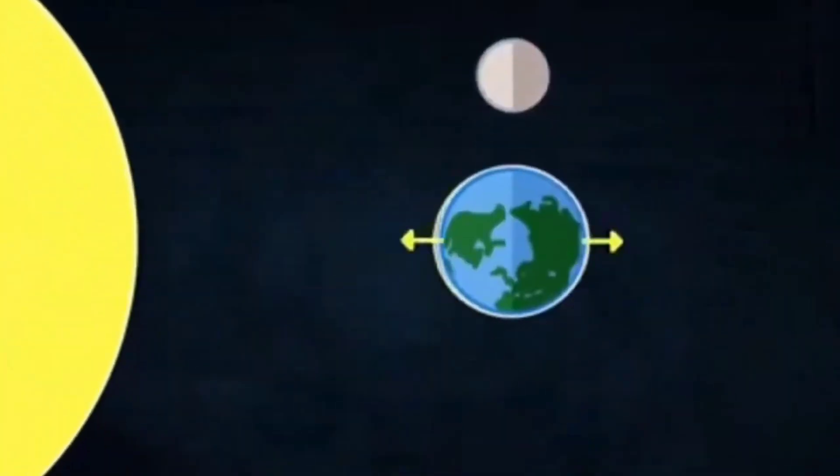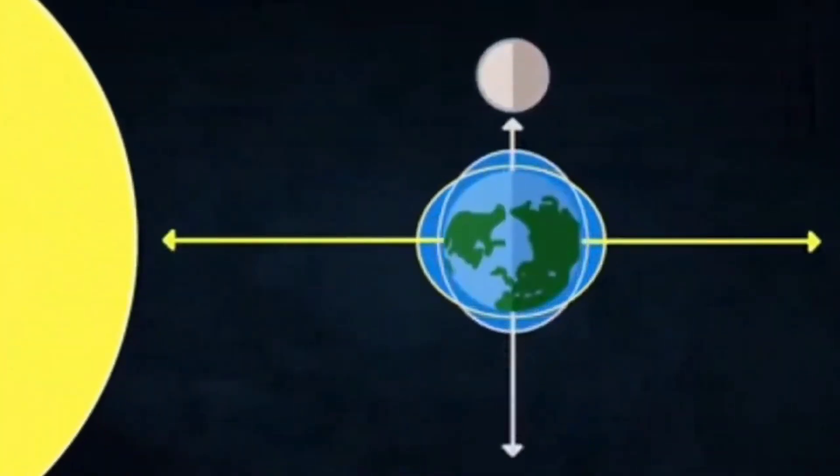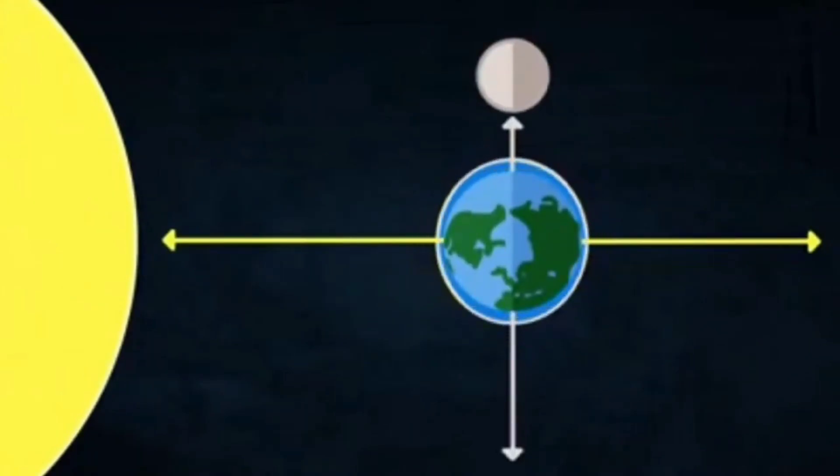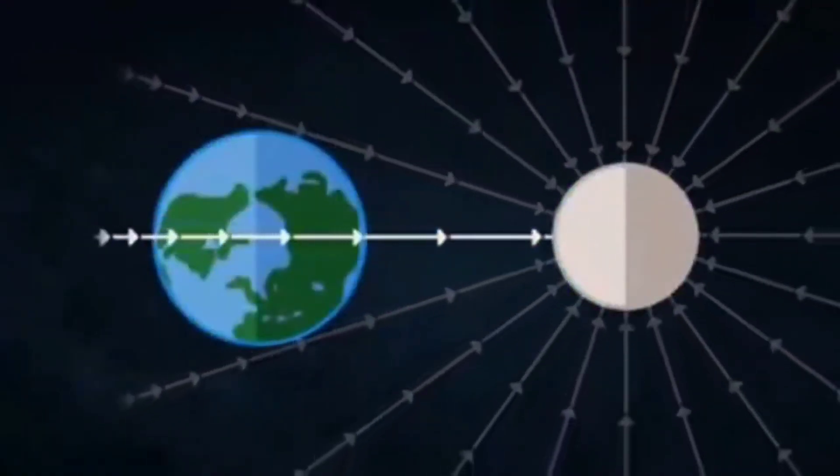At full moon, the sun's tides add to the moon's tides — a 'tide assist' — giving you the highest tides at full moon and new moon. The lowest tide — the neap tide — occurs when the sun is at 90 degrees to the moon, so the two tidal waves basically cancel each other out.